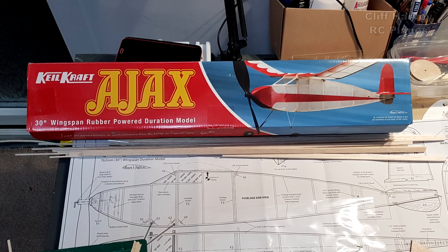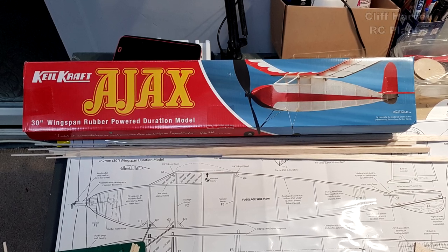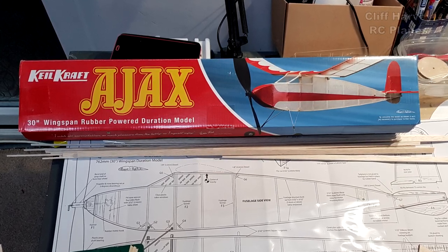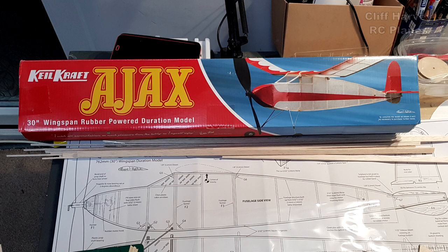The Keelcraft Ajax. It's a 30 inch rubber powered model. I'm going to do it RC because this is such a high performance aeroplane that if I flew it where I fly my little chipmunk I'd lose it. I don't want to lose it so I'm going to make it RC, but it's going to be made very much in the style of a rubber powered model. It's going to be tissue covered and very lightweight RC equipment so really looking forward to it.